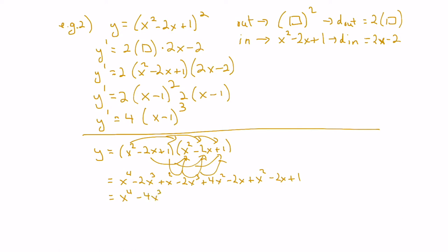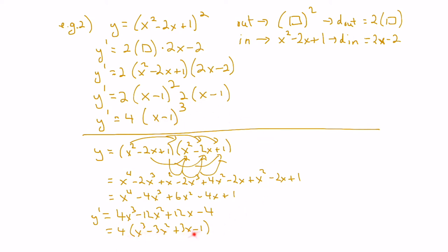Collecting like terms: the x cubed terms give minus 4x cubed, the x squared terms give plus 6x squared, the x terms give minus 4x, and the constant is plus 1. Taking the derivative using the power and sum rules, y prime equals 4x cubed minus 12x squared plus 12x minus 4. Factoring out a 4 gives 4 times x cubed minus 3x squared plus 3x minus 1, which is exactly x minus 1 cubed — confirming our earlier answer.